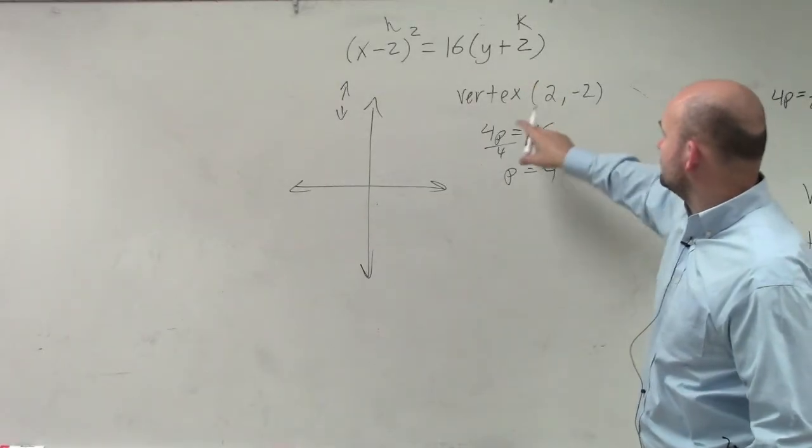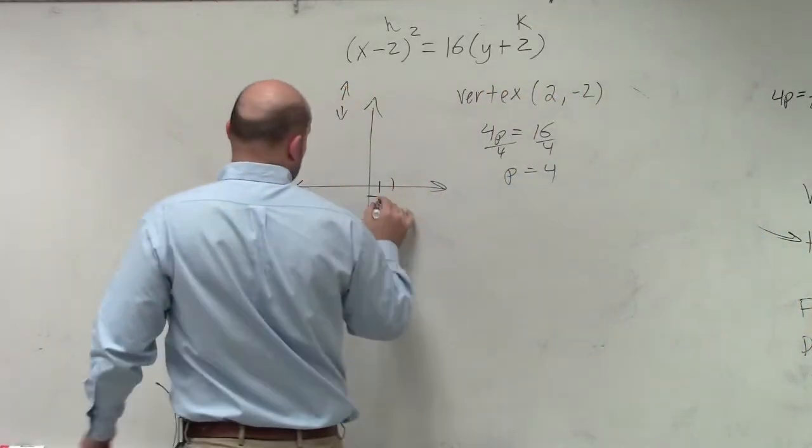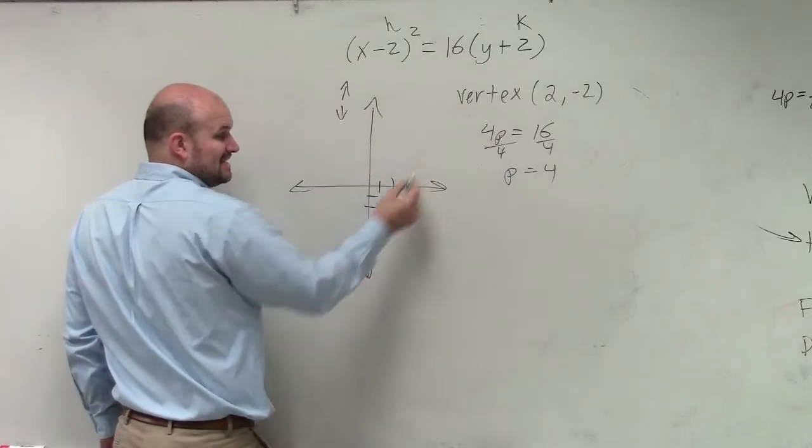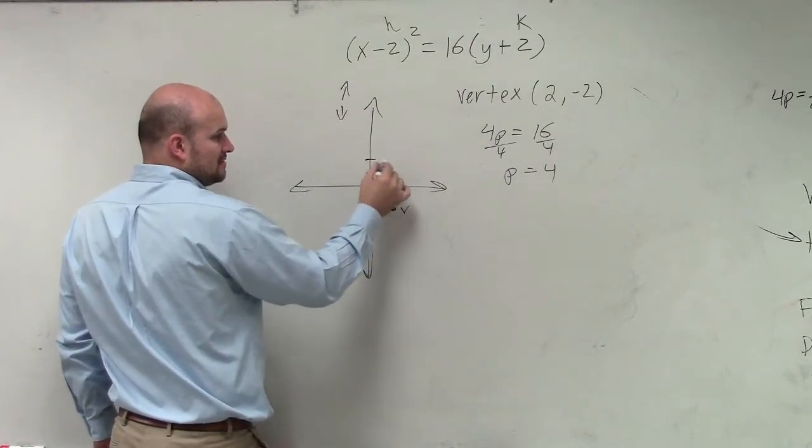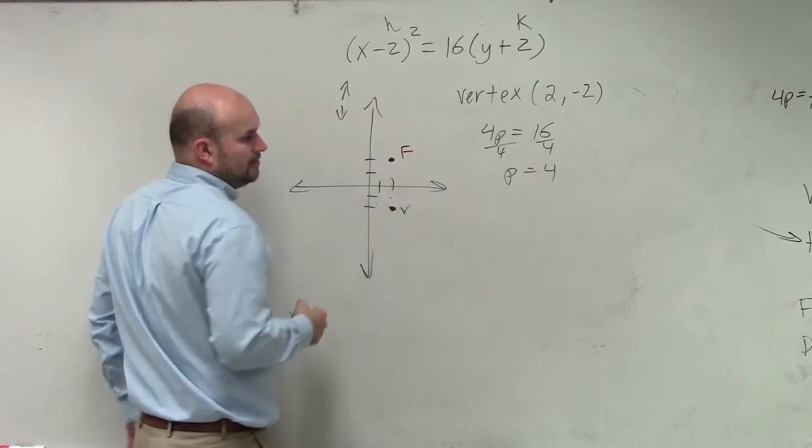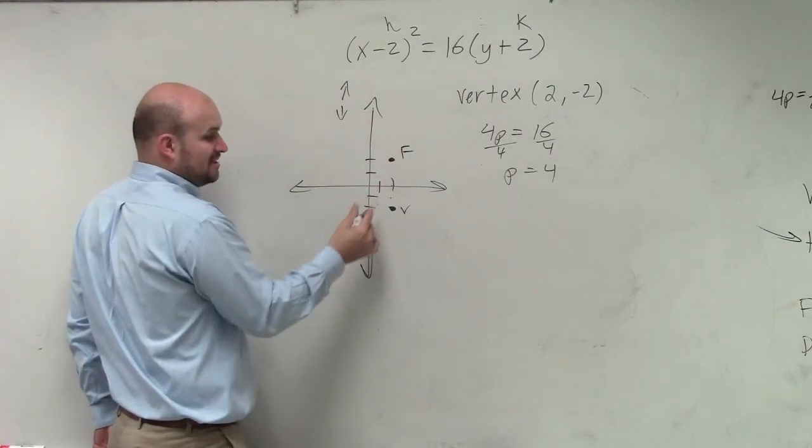So let's graph our vertex, which is 2, negative 2. p is the distance from my vertex to my focus, which is right there. And my directrix is the opposite of p.